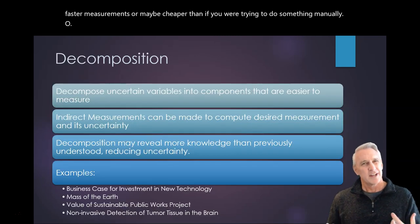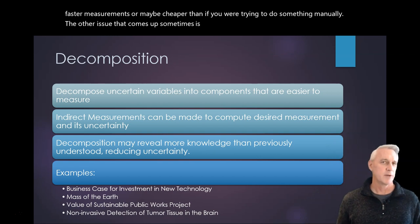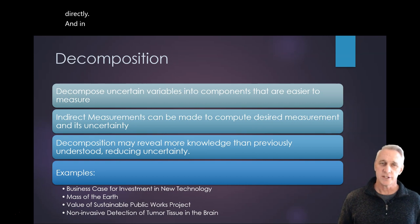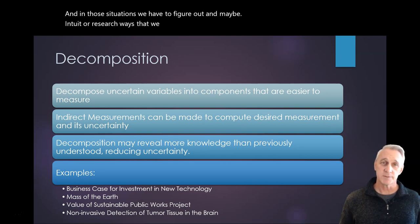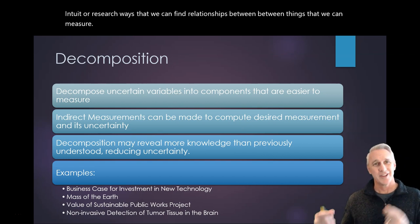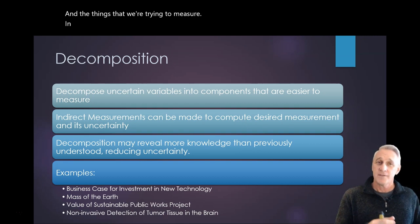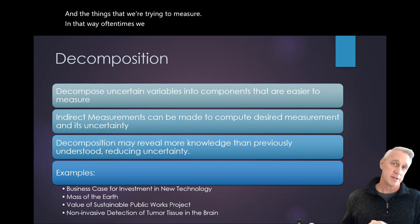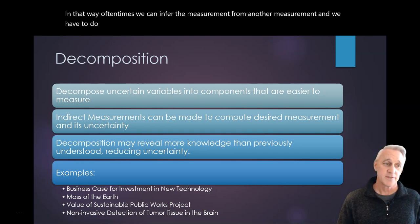So the other issue that comes up sometimes is there are some things that we can't measure directly. And in those situations, we have to figure out and maybe intuit or research ways that we can find relationships between things that we can measure and the things that we're trying to measure. In that way, oftentimes we can infer the measurement from another measurement. And we have to do this in lots of different scenarios.